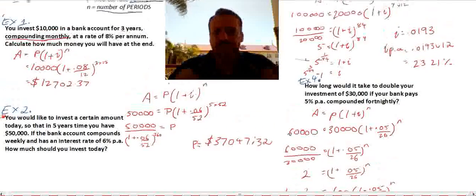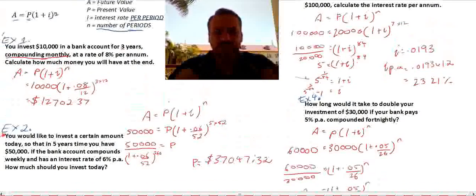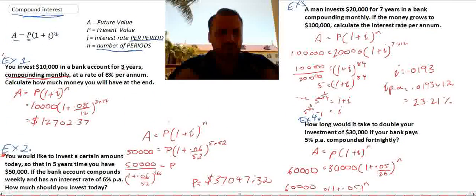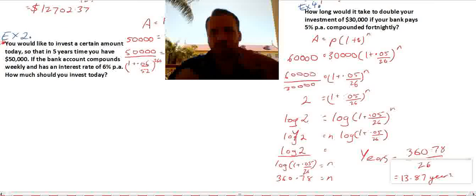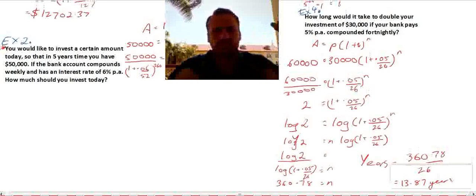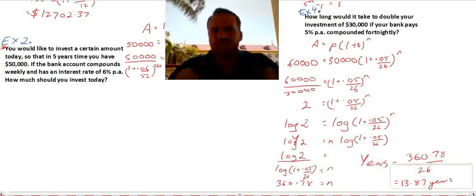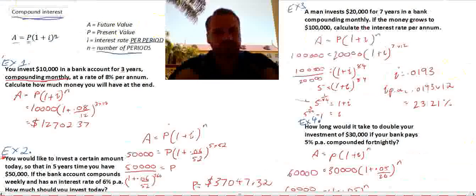Okay. This entire thing has been compound interest. How to find all four of A, P, I and N depending on what you're working on. Try some questions, go through it nice and slow, take your time, and make sure you talk to me when you have any problems with what we're working on. Alright, thanks guys.